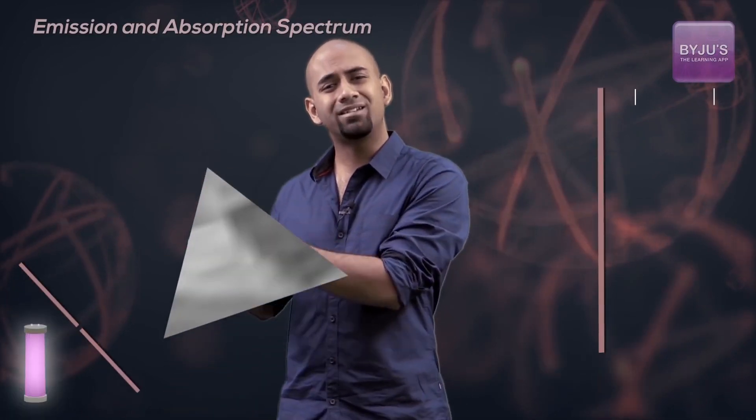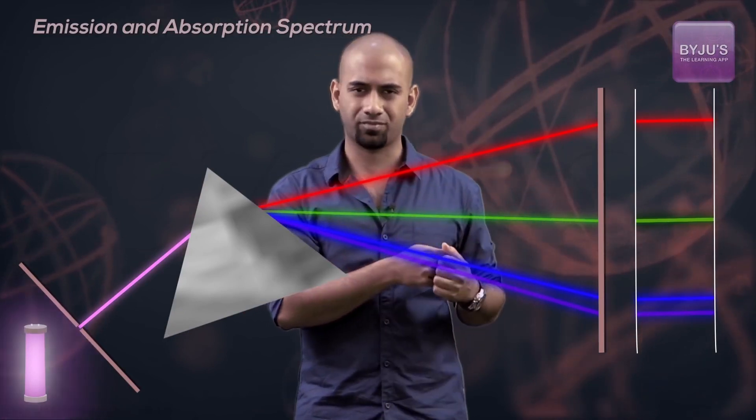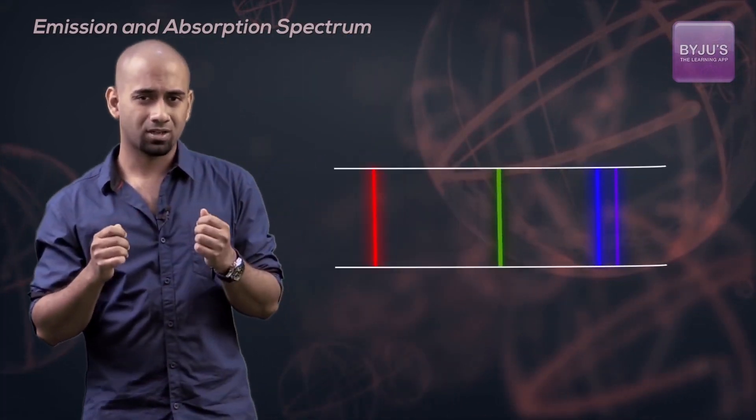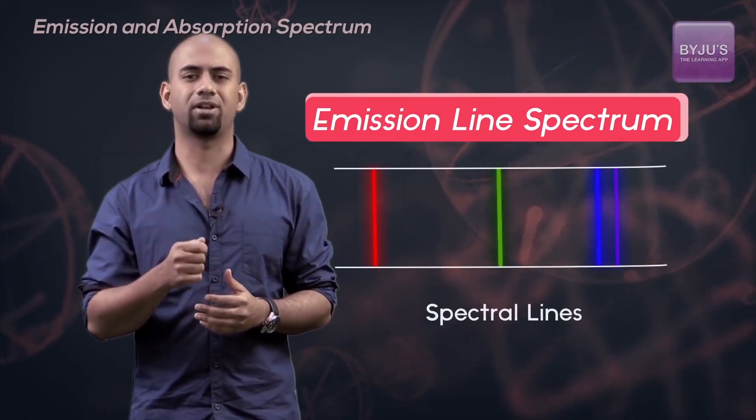When I heat a rarified gas, I get only a set of wavelengths on my screen. This is called the emission line spectrum, and these lines are called spectral lines.